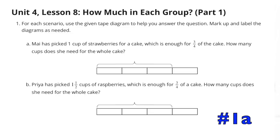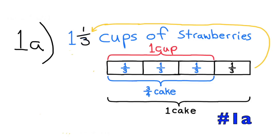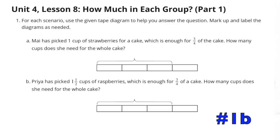Problem 1a: Amy picked one cup of strawberries for a cake, which was enough for three-fourths of the cake. How many cups does she need for the whole cake? In the diagram, the portion in red indicates the amount in one cup, divided into thirds. Three-thirds, or one cup, was only enough for three-fourths of a cake. She'd need another third of a cup, so Amy would need one and one-third cups of strawberries to make one whole cake.